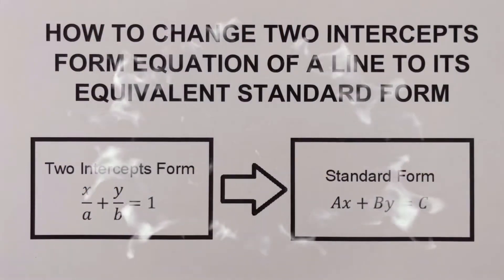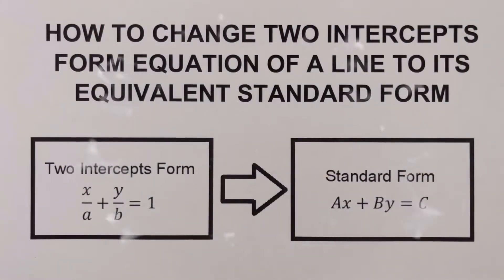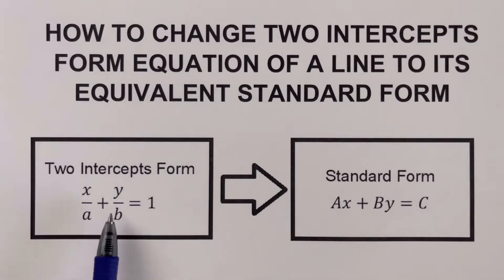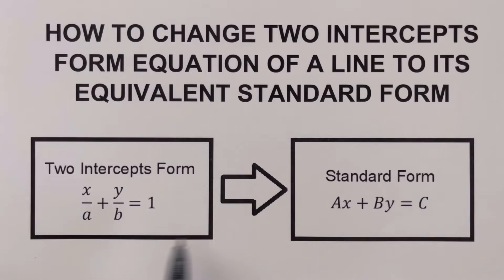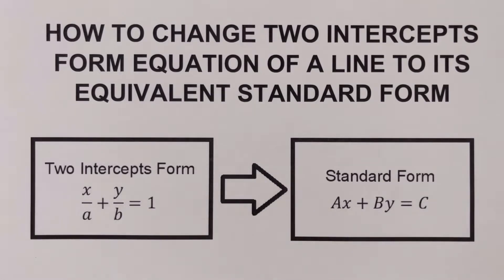Hello everyone. This video will show how to change the two-intercepts form of a line to its equivalent standard form. We are given the two-intercept form x over a plus y over b equals one, and we are going to transform it to its equivalent ax plus by equals c form.